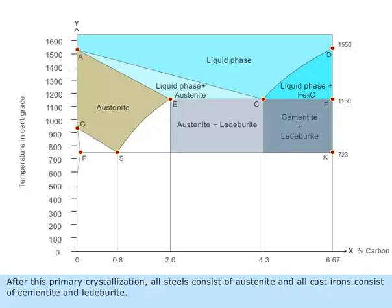After this primary crystallization, all steels consist of austenite and all cast irons consist of cementite and ledeburite.